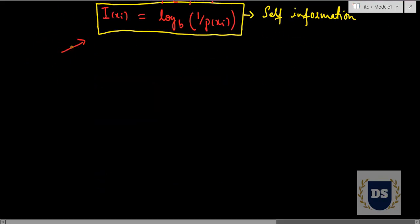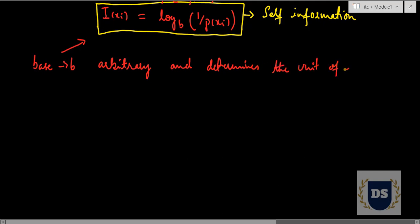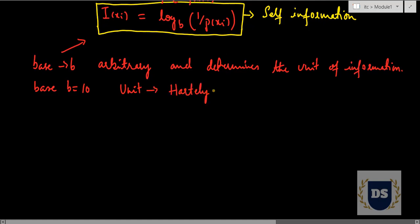In the formula for self-information, the base b is arbitrary and determines the unit by which we measure information. If the base b equals 10, then the unit of information is the Hartley. If the base b equals e (epsilon/natural base), then the unit of information is nats.